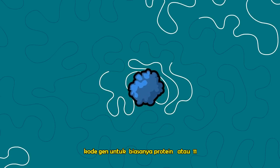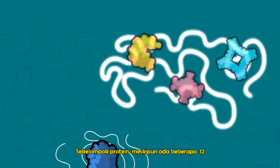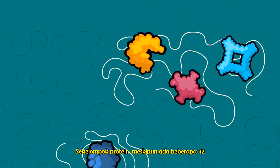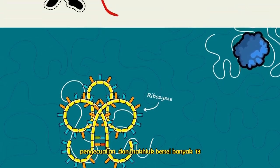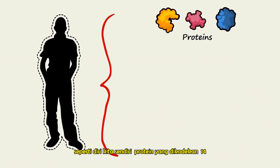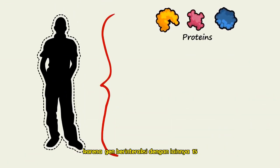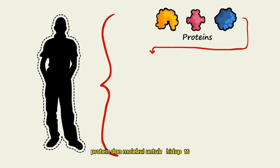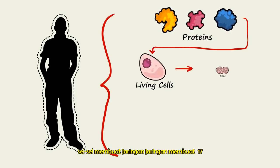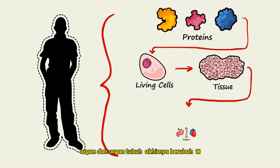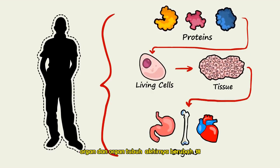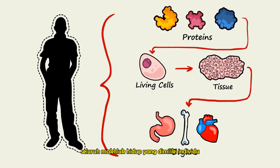Usually a protein, or a group of proteins, though there are a few exceptions. In multi-celled creatures like ourselves, proteins — which are coded for by genes — interact with other proteins and molecules to make up living cells. Cells make up tissues, tissues make up organs, and organs ultimately make up entire living creatures.